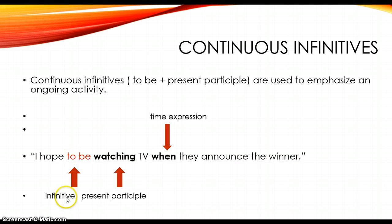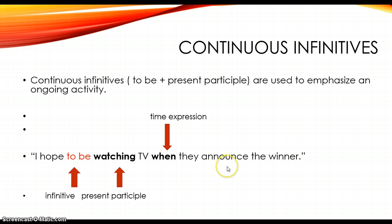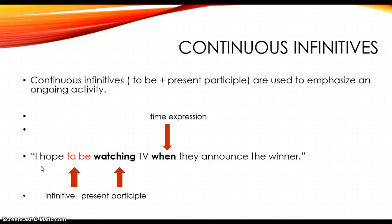In that sentence, 'to be' is the infinitive in red, and the present participle in bold is 'watching.' Continuous infinitives also usually have a time expression — here it's 'when.' This sentence means I am waiting for them to announce the winner of a contest, maybe a game on TV. I don't know when they're going to announce the winner, but they will announce it on TV. So I hope that when they announce the winner, I will be watching TV at that time.